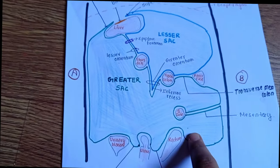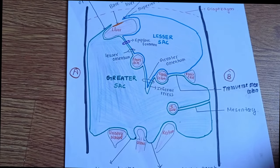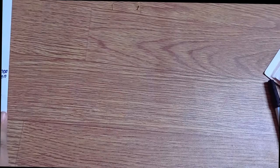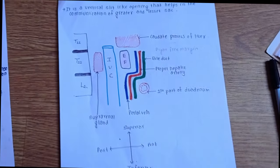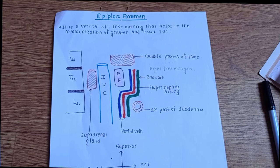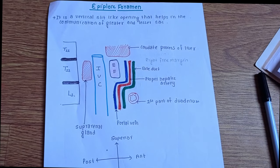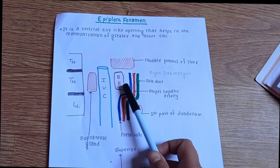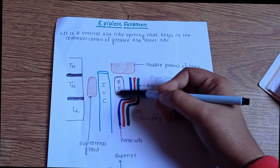This is the peritoneum. Now let us discuss something about the epiploic foramen. I have drawn a rough figure here. Epiploic foramen is a vertical slit-like opening that helps in the communication of greater and lesser sac. Here we can see the epiploic foramen. This one I have written EF is for the epiploic foramen.